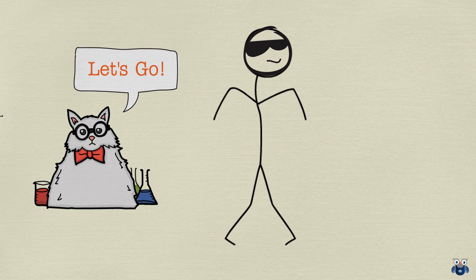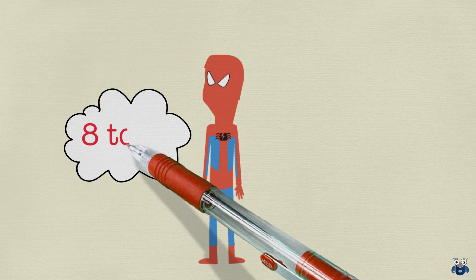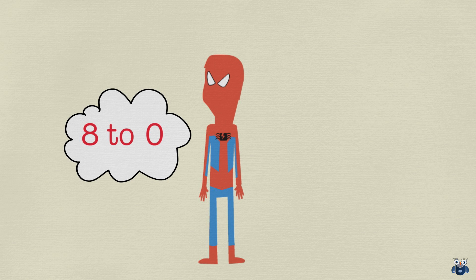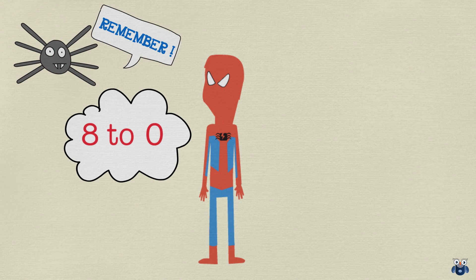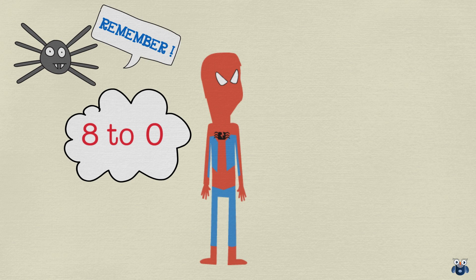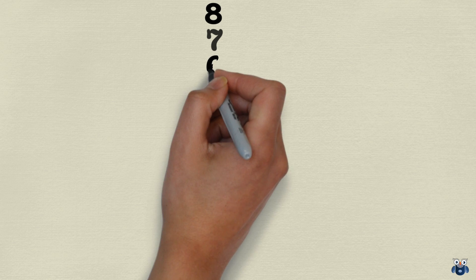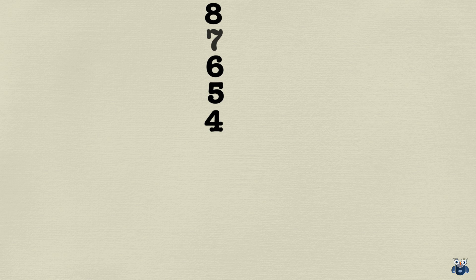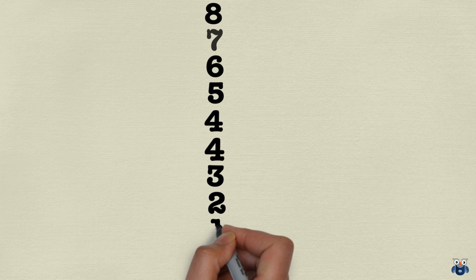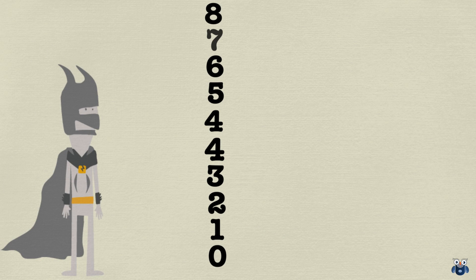Let's begin. First, I will write down numbers from 8 all the way to 0. And I want you to remember one key thing — we will write the number 4 twice. So we have 8, then 7, 6, 5, 4, then 4 once again, then 3, 2, and 1, finally 0. That was not too bad, was it?